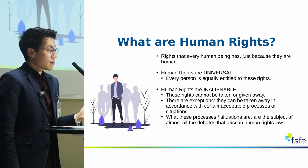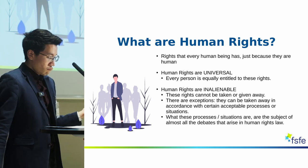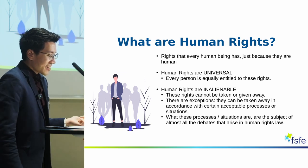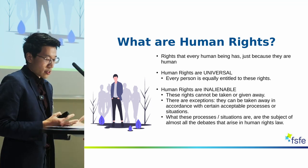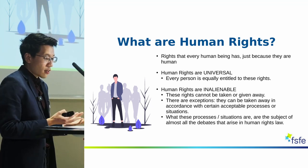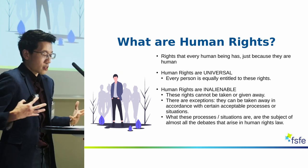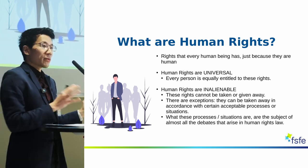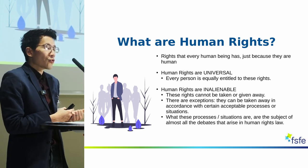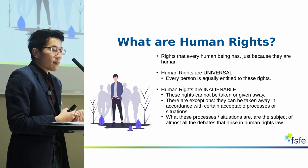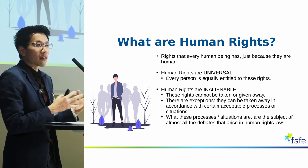Human rights are universal — every person is equally entitled to enjoy these rights. They're also inalienable, meaning they cannot be taken away from you or given away. Under human rights law, they should not be taken away unless in accordance with certain acceptable procedures. For example, you have the human right to liberty, but if you commit a crime and are put in prison following a fair trial, your human right to liberty is being restricted — but that restriction is not a violation of human rights law because it's done in accordance with certain procedures.